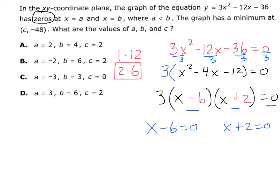So now let's solve each one. I will add 6 on both sides, and I have x equals 6. And I will subtract 2 on both sides, so x equals negative 2. So these are my two zeros. These are my two solutions. This is a solution, and this is a solution. 6 and negative 2.